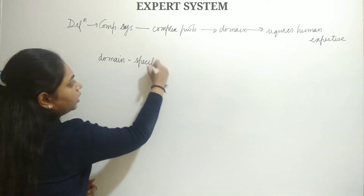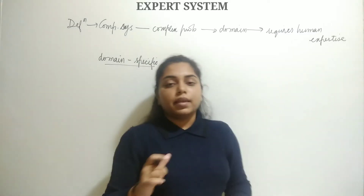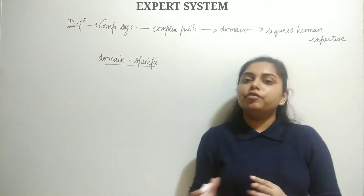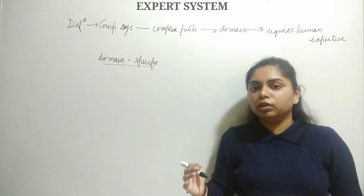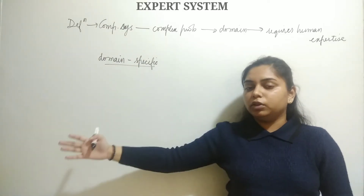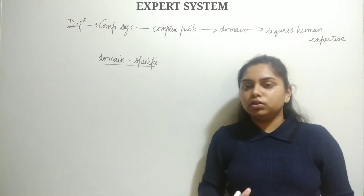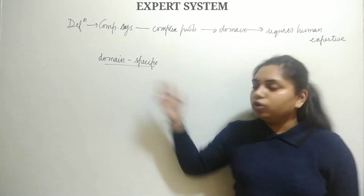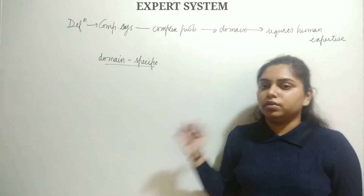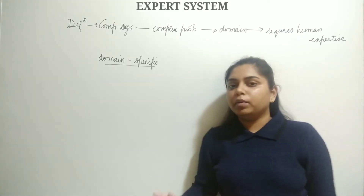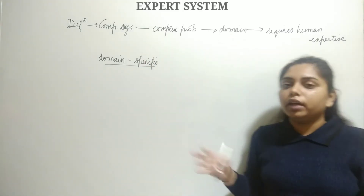For example, a teacher works in a particular field and domain, and a doctor works in a particular domain. Each has domain-specific expertise and educational requirements. Expert systems are designed to solve complex problems in such domains.